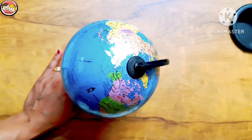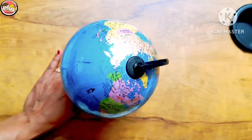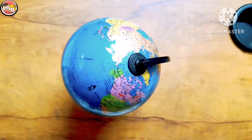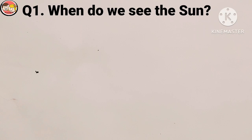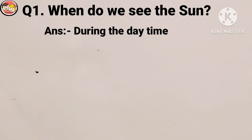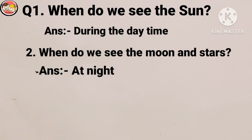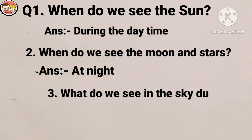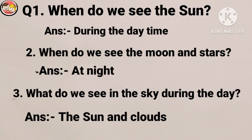Today we have learned so many things about day and night, the sun, and the earth. I hope the day and night concept is clear to everyone. Now it's time to check how much you have learned. Number one: when do you see the sun? During the daytime. Next: when do you see the moon and stars? At night. Well done! What do you see in the sky during the day? Very good — the sun and clouds!